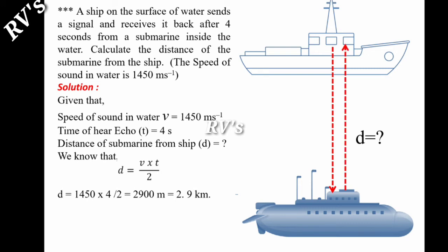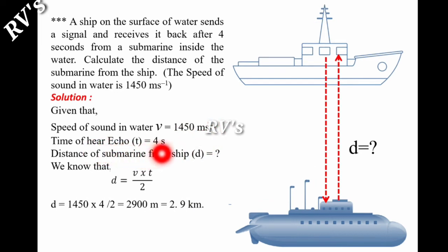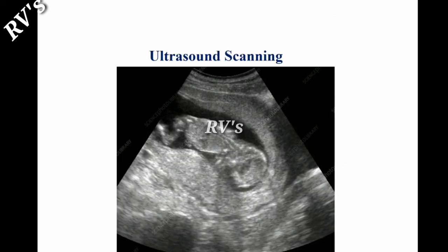We receive the signal after 4 seconds. We need to calculate the distance. We know that d equals v times t by 2. Therefore, d equals 1450 times 4 seconds by 2. That is roughly 2900 meters, which means 2.9 kilometers. The distance between ship and submarine is 2.9 kilometers.